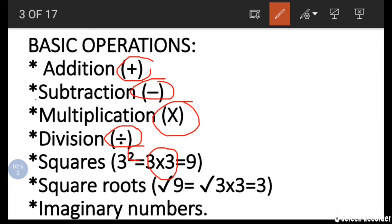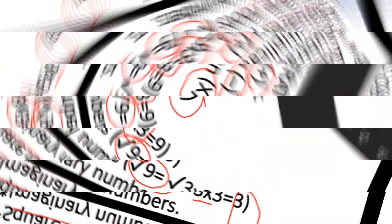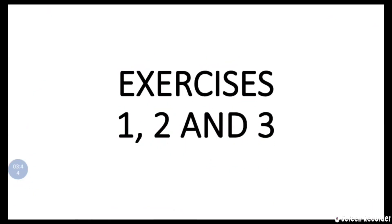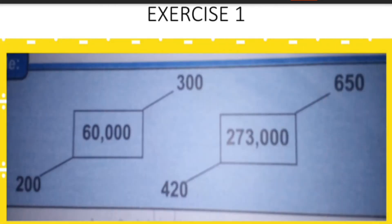We also have squares — for example, 3 squared means 3 times 3, which is 9. Then we have square root, which is the opposite of square: the square root of 9 is 3, because 3 times 3 is 9. Finally, imaginary numbers are numbers used in questions but not shown; they will generally be between 1 and 10, except in one or two cases.